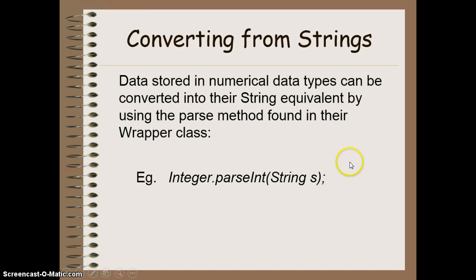If I want to go from a string to a numerical data type, I can use, again, code found in the wrapper class. They all have some sort of parse method. So parseInt would give me the integer value of a string, parseDouble would give me the double value, parseFloat, and so on. So all numerical data types have this parse method that allows me to convert from a string to the type of variable I'm looking for.